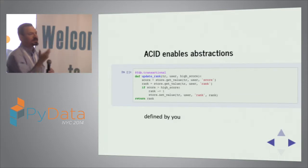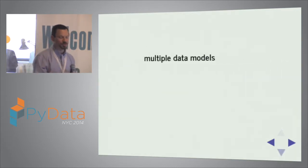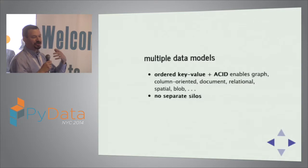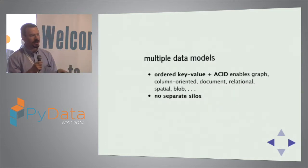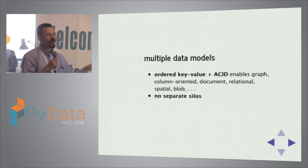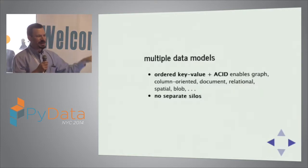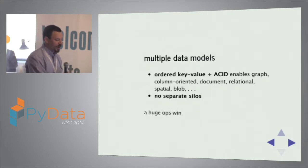This allows you to define abstractions using simple Python functions — not pre-built, but something you define. And this in turn allows multiple data models. We have a SQL layer and a document layer. You can easily imagine a graph database, spatial/geospatial, blobs, column-oriented — you can implement all of these as layers against a single back-end store without separate silos. People talk about polyglot persistence with separate back-ends for different data classes, which can become a real ops nightmare. Being able to do this in one store is a big ops win.